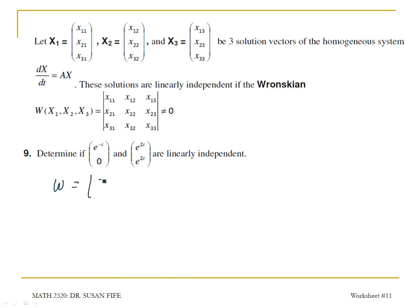I'm gonna have e to the t, e to the negative t, and 0 for my first column, that's from this first solution vector. And then I have e to the 2t and e to the 2t for my second solution vector.